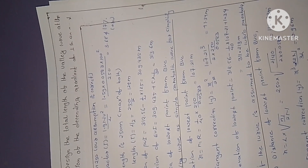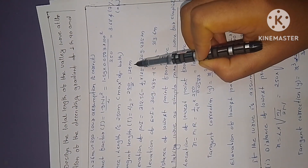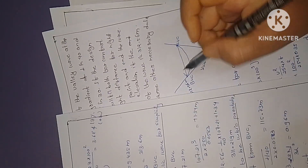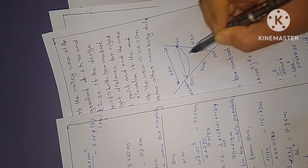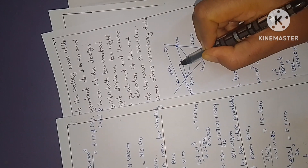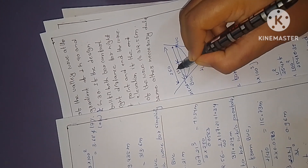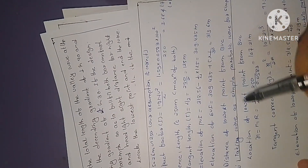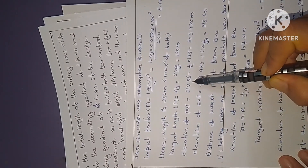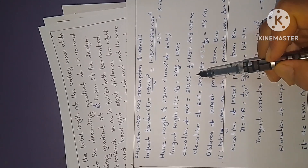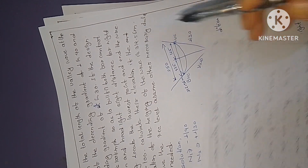The tangent length T equals L divided by 2. The total length is 250 m, so T equals 125 m on each side. The elevation of the PVI (point of vertical intersection) is calculated from the BVC elevation of 312.56 m.